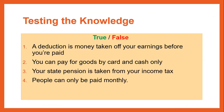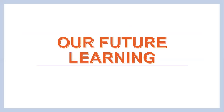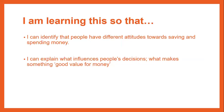Let's test our knowledge. Number one: a deduction is money taken off your earnings before you're paid — true or false? Number two: you can pay for goods by card and cash only. Number three: your state pension is taken from your income tax — true or false? And number four: people can only be paid monthly. You've learned this so that you can identify that people have different attitudes towards saving and spending money, and explain what influences people's decisions and what makes something good value for money.